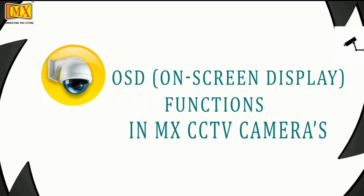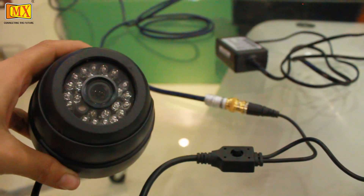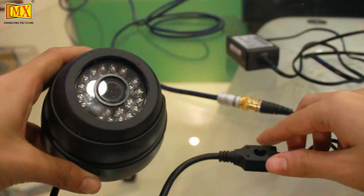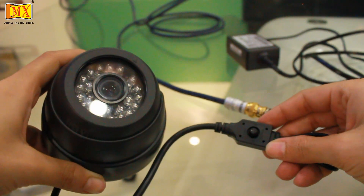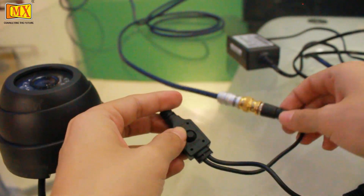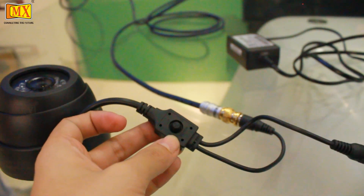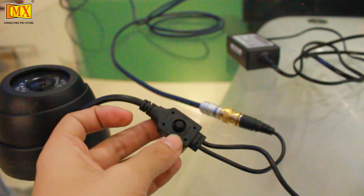Hi friends, today we will learn about OSD functions in MX-60 TV cameras. OSD stands for On Screen Display. An OSD is a control panel attached to the power and video card of the CCTV camera that allows you to select viewing options and adjust components of the display such as brightness, contrast, shutter speed, and privacy.